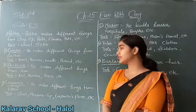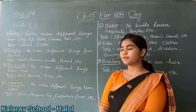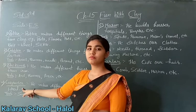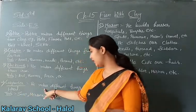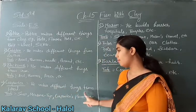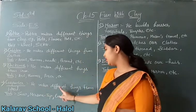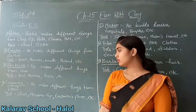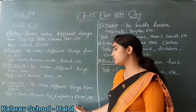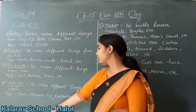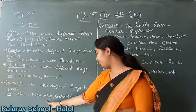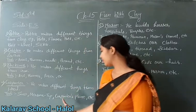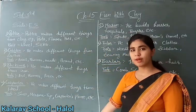Now see, what is number 4 given in your workbook? Carpenter. So what does carpenter do? Carpenter makes different things from wood. Here you will write: he makes different things from wood. Now which tools does carpenter use? Write tools, then all the tools: measuring tape, carpenter's plane, etc.